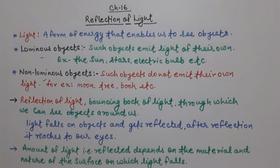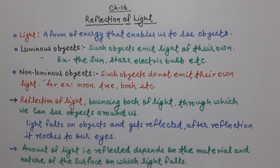As the name of this chapter is Reflection of Light, let's understand what reflection means. Simply, reflection means bouncing back of light — light bounces back — through which we can see objects around us.